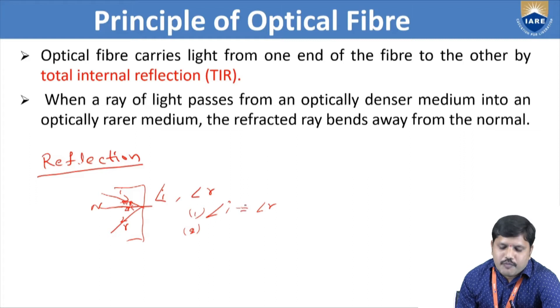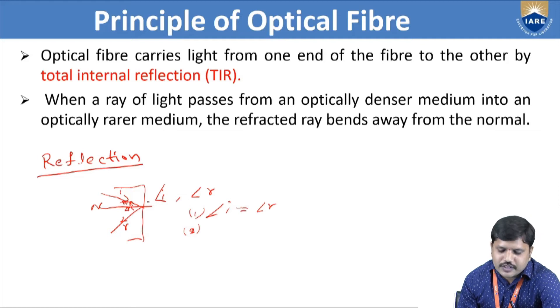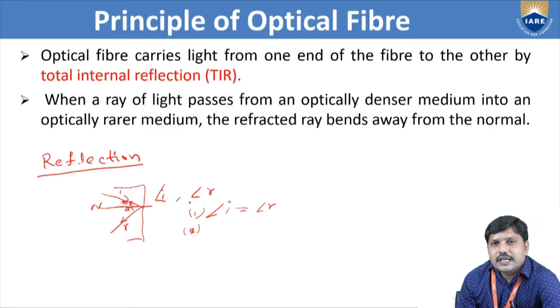Now we are going to see total internal reflection. But here, before that, we also need to know refraction. So what is refraction? In reflection, only one medium is taken — in one region the light ray is passing, and when it is incident on the boundary, it bounces back. But in refraction, the case is two mediums.